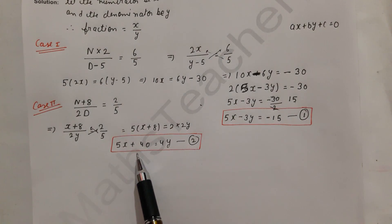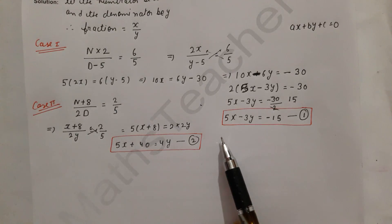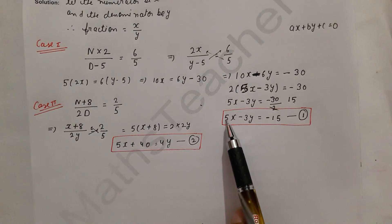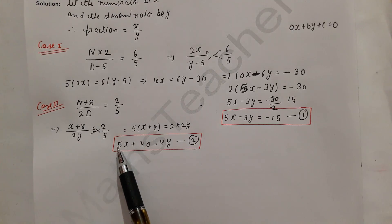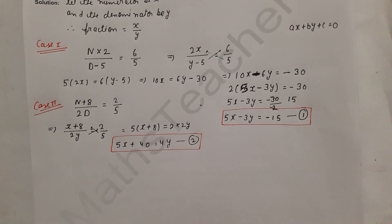We now have two linear equations in two variables. The methods available are graphical, substitution, elimination, and cross multiplication. I will solve using the elimination method, because the coefficient of x is 5 in both equations.